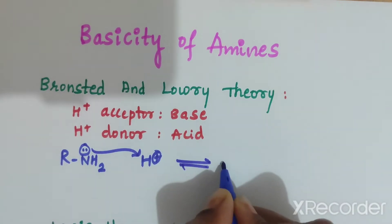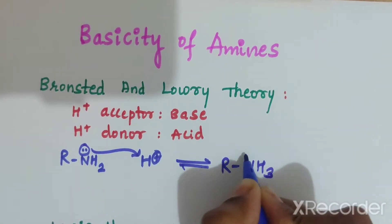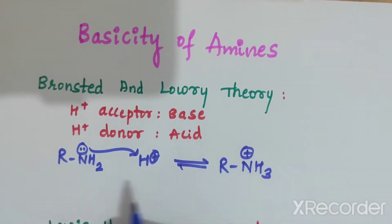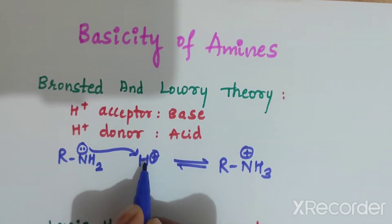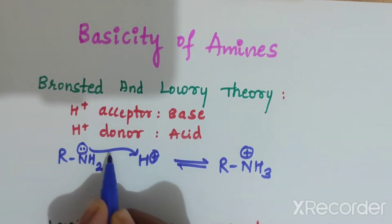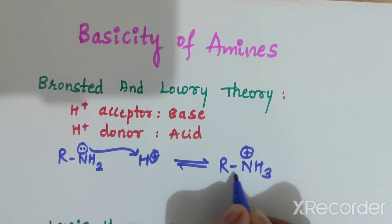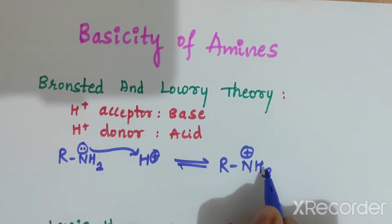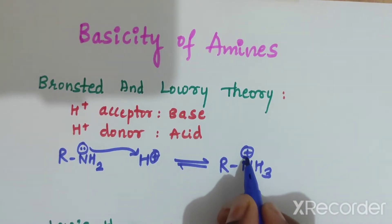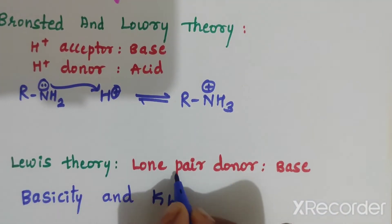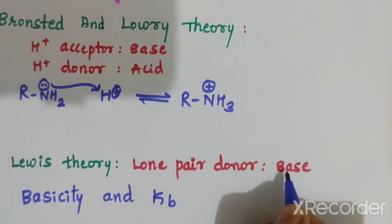So we will get R-NH3+, where nitrogen will carry a positive charge. As R-NH2 is an amine, the proton from the acid adds to the nitrogen. We get R-NH3+, where nitrogen carries a positive charge. According to Lowry theory, a lone pair of electron donor is a base.